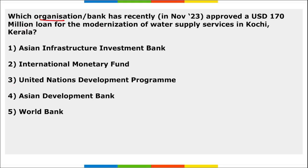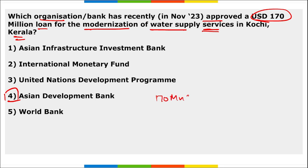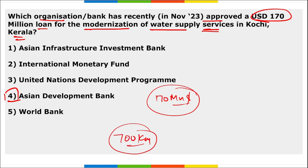Next: which organization recently approved a $170 million loan for the modernization of water supply services in Kochi, Kerala? It is the Asian Development Bank. The aim is to improve urban living, ensure clean water access, and bolster climate resilience. Under this project, 700 kilometers of pipes will be replaced with real-time monitoring to reduce water loss, and 1,46,000 water meters will be upgraded.